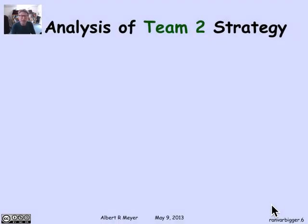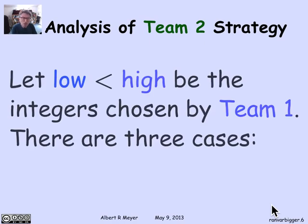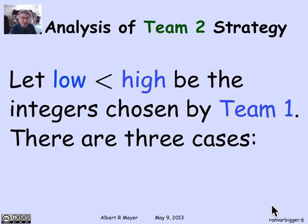Let's analyze the probability that team two wins. Suppose team one picks two numbers — we don't know what they are, but they must pick a low number less than a high number, at least one apart. They can't write the same number on both pieces of paper. So one number is less than the other — we don't know by how much — but low is less than high.